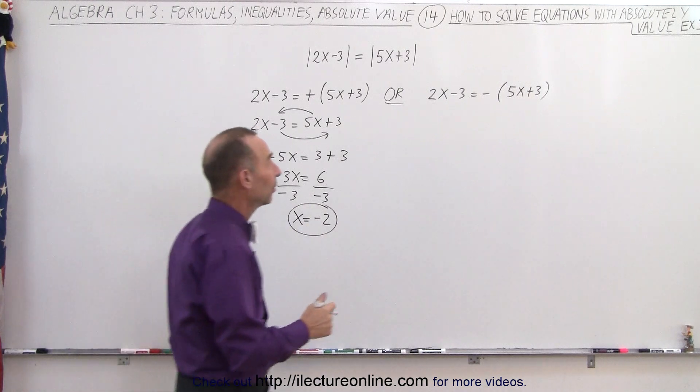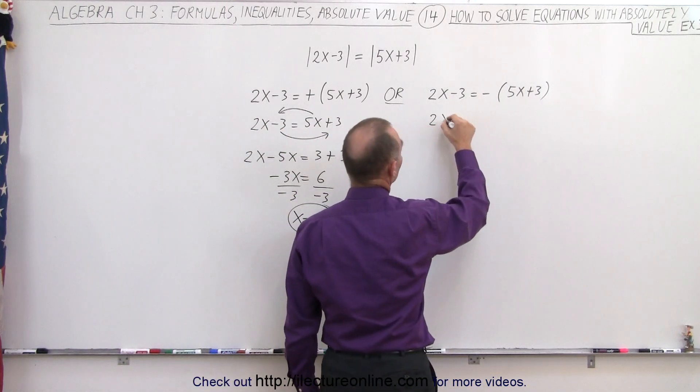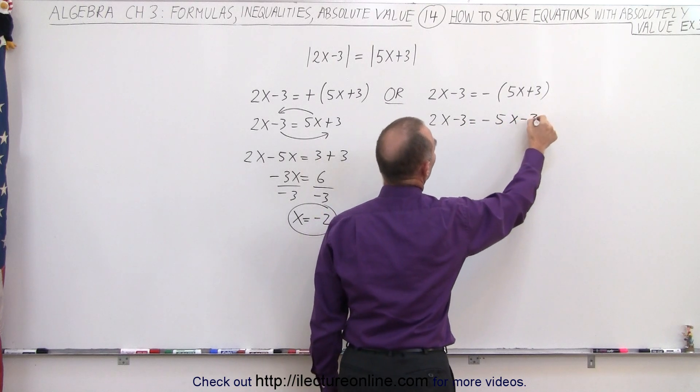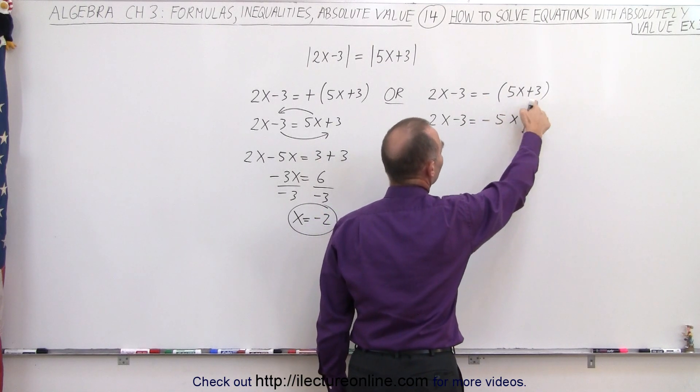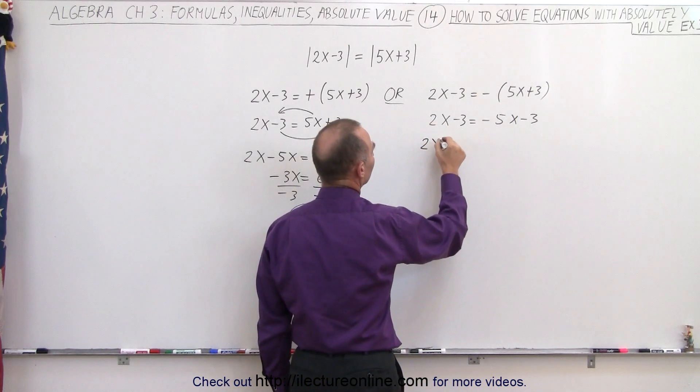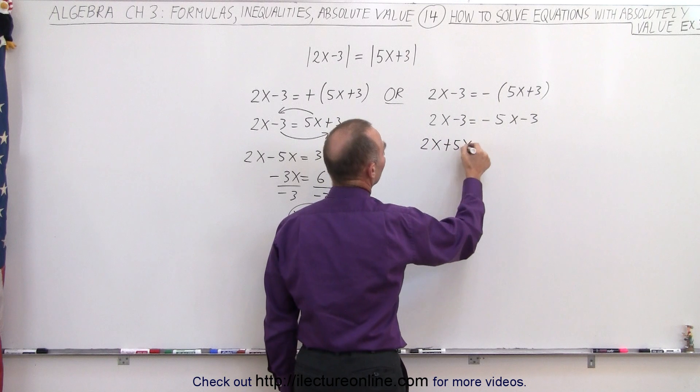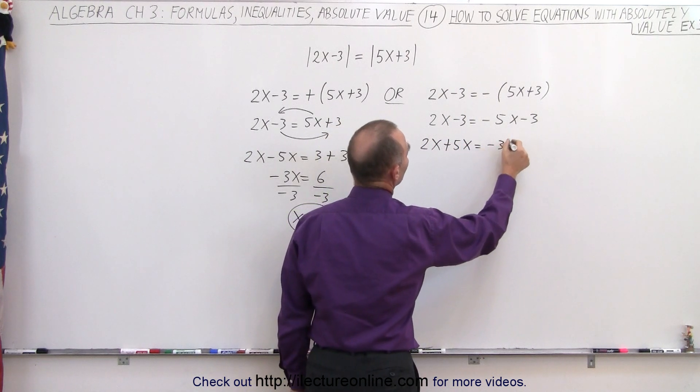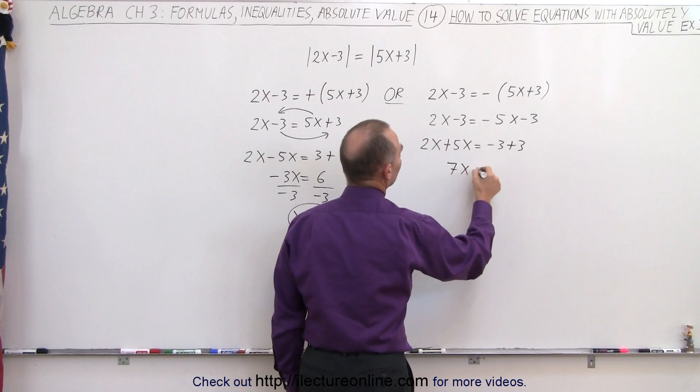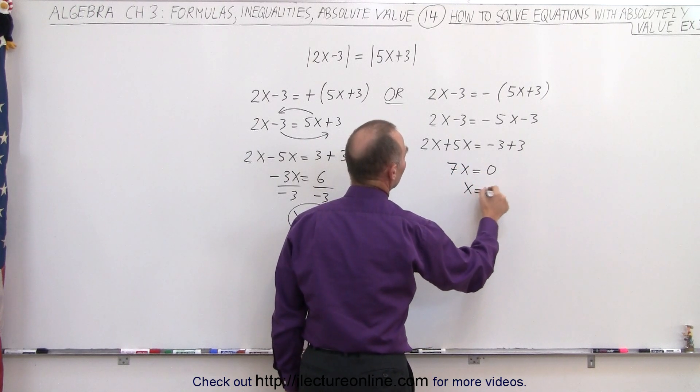On the right side, we end up with 2x minus 3 is equal to minus 5x minus 3. Notice the negative applies to both the plus 5x and the plus 3. Now move all the x's to one side, 2x plus 5x is equal to minus 3 plus 3. Combine these two, 7x is equal to 0, x is equal to 0.